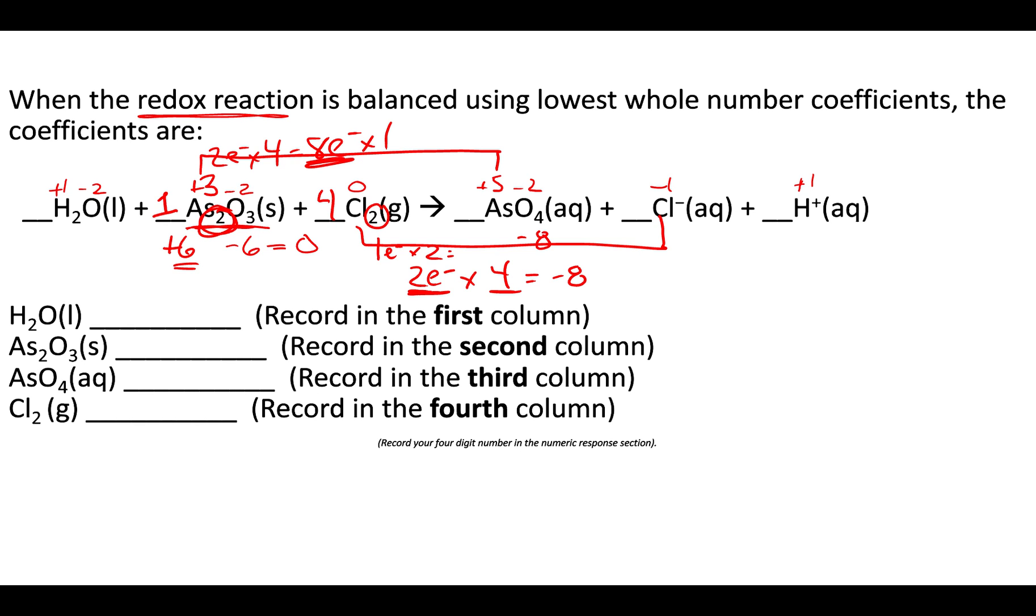Now that we've balanced based on the exchange of electrons, we're ensuring eight electrons being exchanged. Now you balance the rest by inspection. So I'll look at AS, I need a two here. Chlorine, I'll need an eight here. Sorry with all the red, but it's getting a little messy. Oxygen on the right hand side has eight of them. And on the left hand side, we have three from the AS2O3. So I will add... I think we need five here. So let's just see if that will work out. And then five times two is ten, and we'll need a ten there.